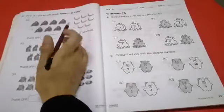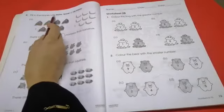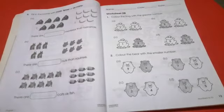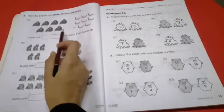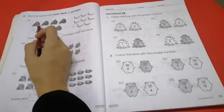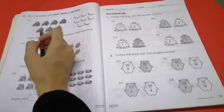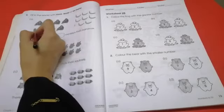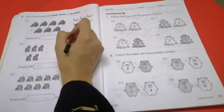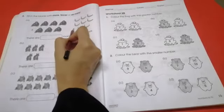Now we will go to the next page. Fill in the blanks with more, fewer and as many. We have to count it. 1, 2, 3, 4, 5, 6, 7. We have 7 monkeys. And how many bananas we have? 1, 2, 3, 4, 5, 6, 7 and 8. We have 8 bananas.